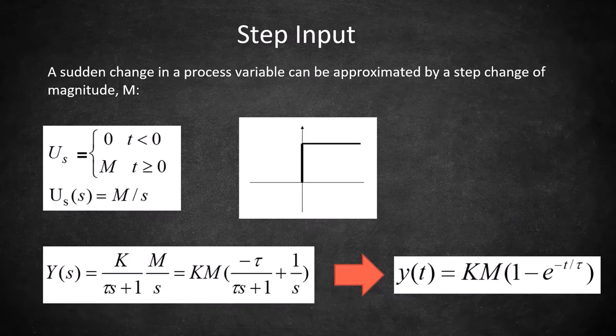The first step in incorporating this input into our overall model is to make this input a function of time, as shown on the left. u_s of t equals m when t is greater than or equal to zero.